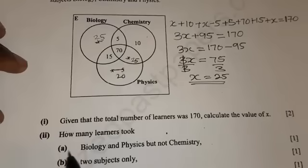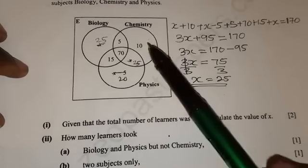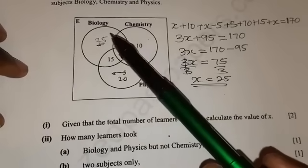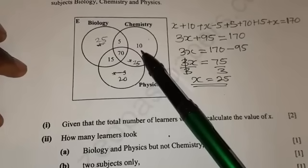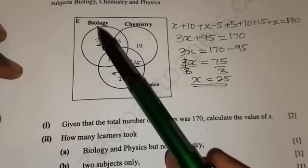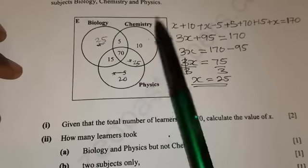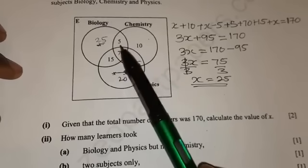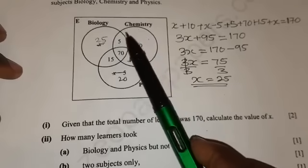But B says how many learners took biology and physics but not chemistry. So they want you to find the total number of learners that took biology and physics but not chemistry. In other words, they want you to find the union of set biology and set physics intersect chemistry complement. We remove all the elements that are in set chemistry.